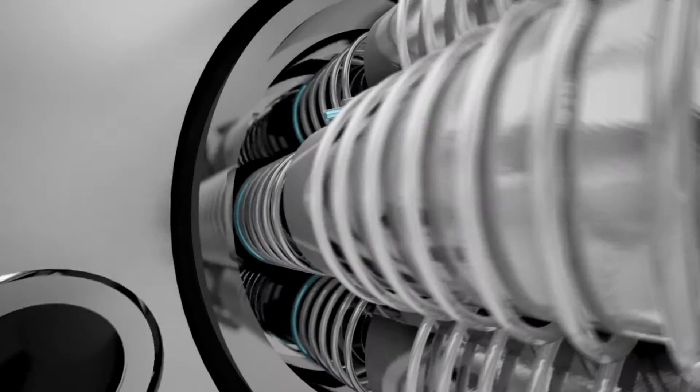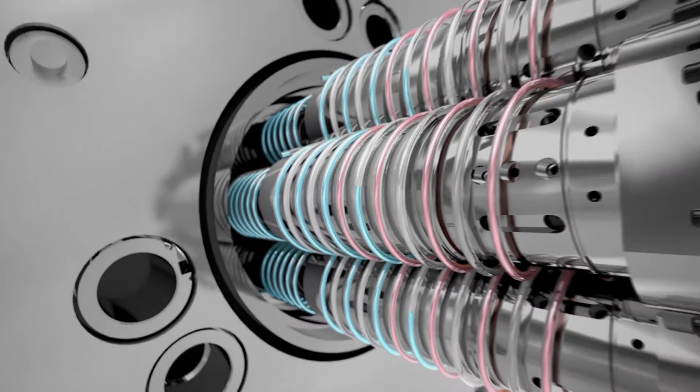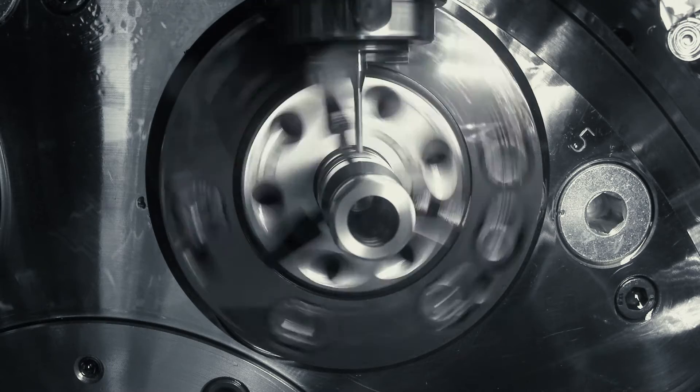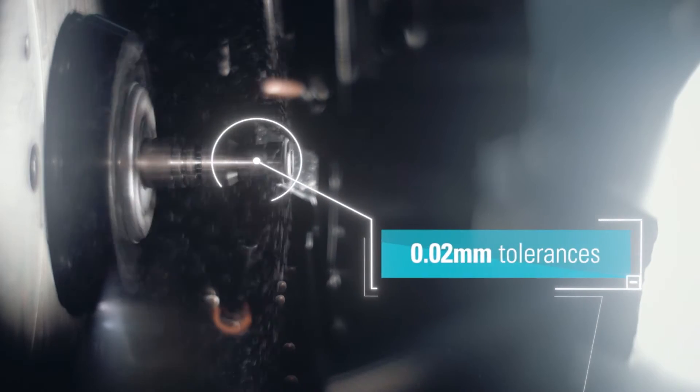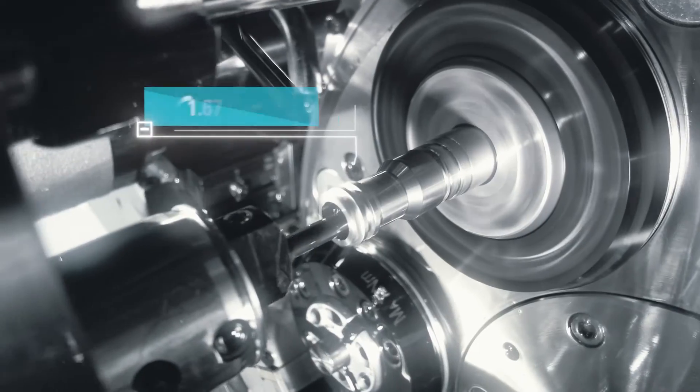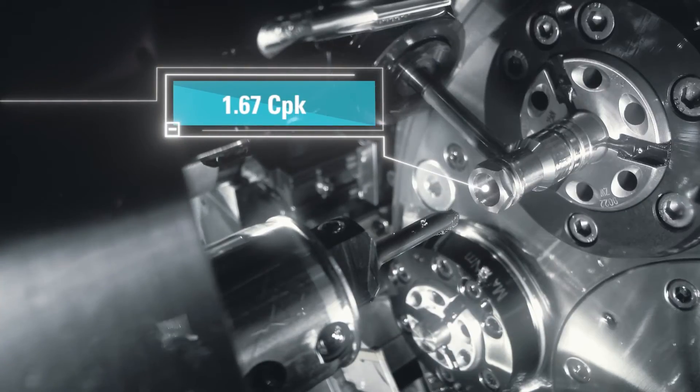Liquid cooling techniques are used to control thermal growth. The result is unprecedented levels of accuracy, with 20 micron tolerances across all six spindles routinely held to 1.67 cpK.